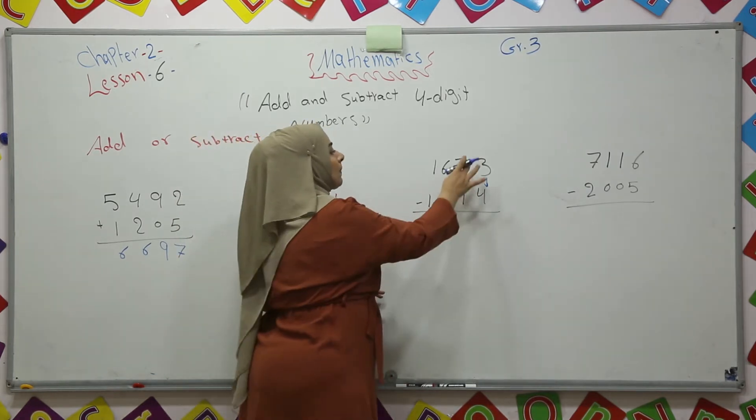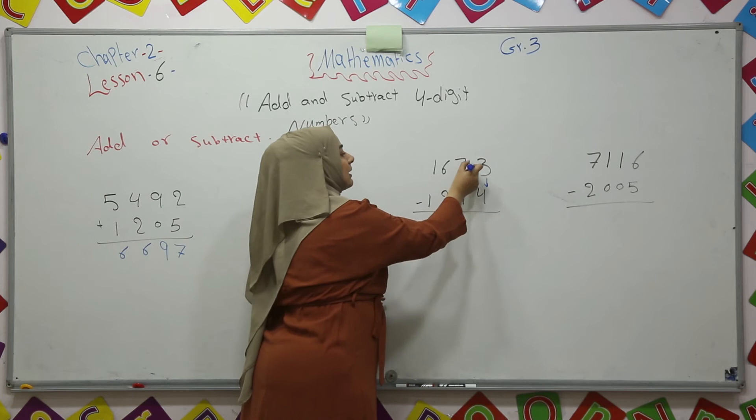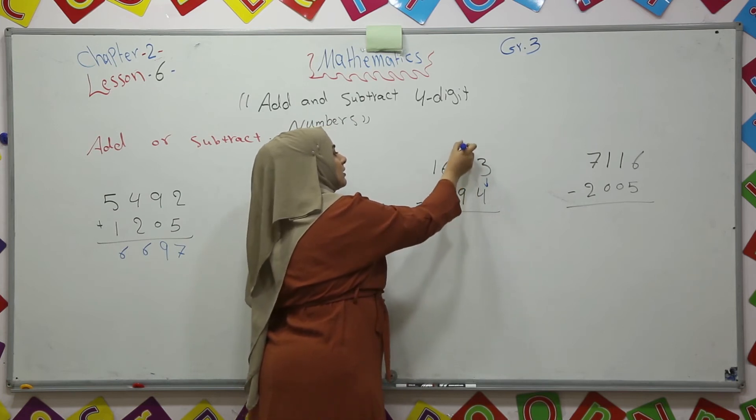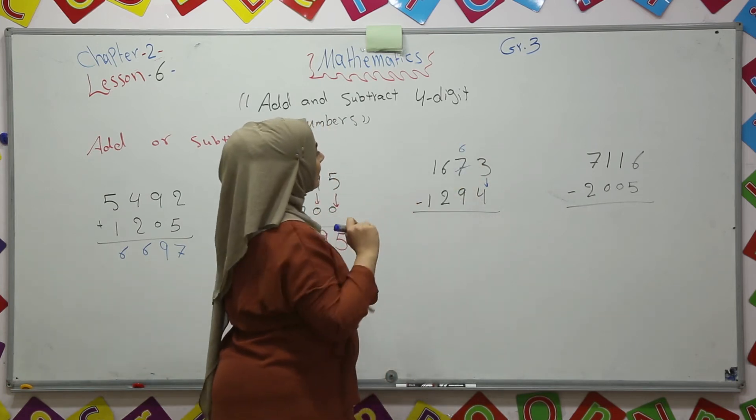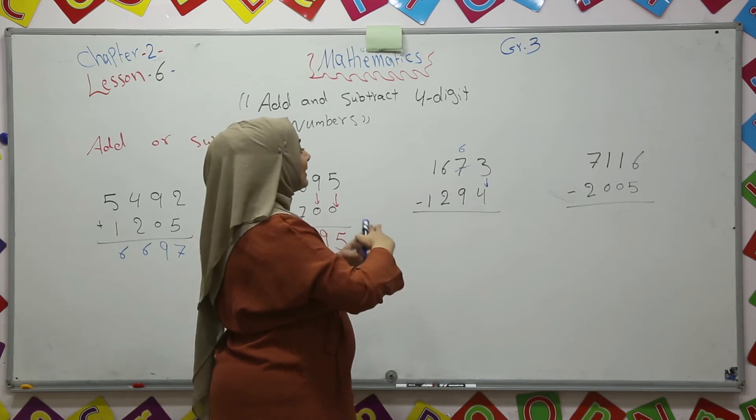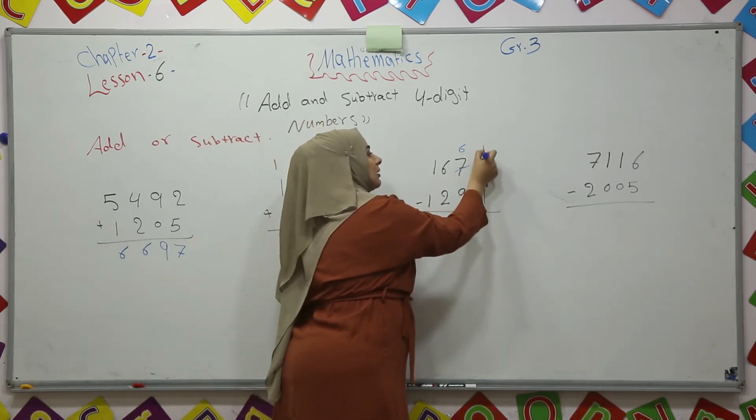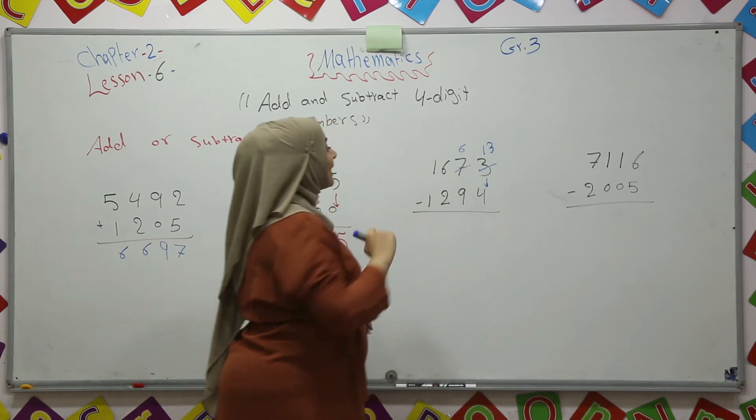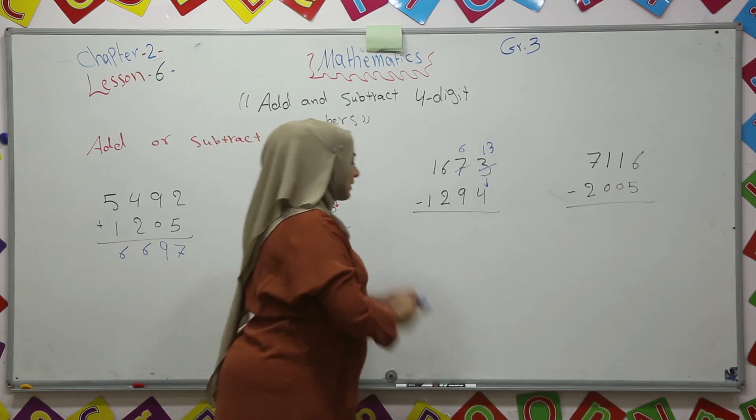We can't do it. So I will break apart these tens. 6 tens will stay here. And I will break apart one ten for ten ones. So these three will be 13.